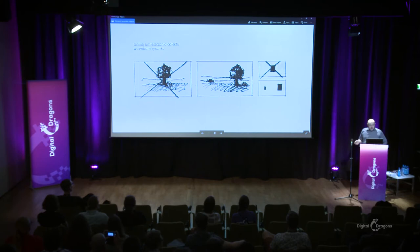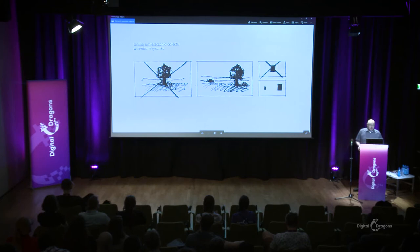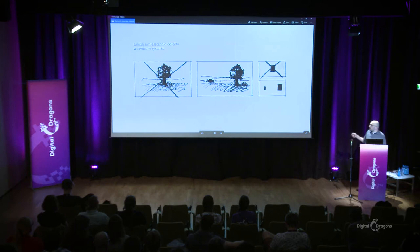First: go away from symmetry. This is of course debatable — there's a discussion about it — but mostly, especially in hidden object games, you go away from symmetry. Don't make anything symmetrical. As you can see on this simple diagram: don't put something in the middle of a picture. Obvious, looks simple.